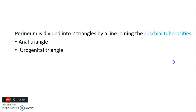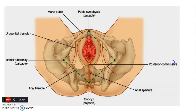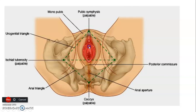You have an anal triangle posteriorly and a urogenital triangle anteriorly. The urogenital triangle in females has the labia, the urethra, and the opening of the vagina. In males you have the penis in the urogenital triangle. And the anal triangle contains the anal canal.